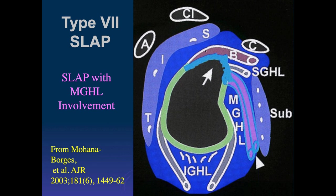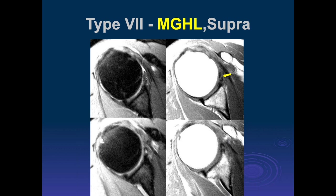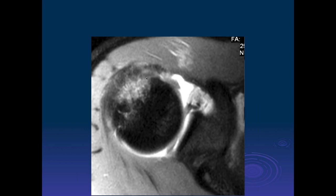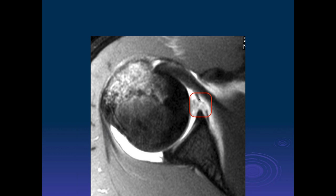Type 7 SLAP tear is a superior tear, often involving the biceps anchor, but the key feature is a longitudinal tear extending into the middle glenohumeral ligament. This was described by a radiologist. Following the tear from above, we have a SLAP tear superiorly that then extends out into the middle glenohumeral ligament. On the axial images we see some pathology at the origin of the middle glenohumeral ligament, and following it down reveals longitudinal tearing of the middle glenohumeral ligament — a Type 7 SLAP tear.